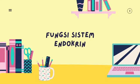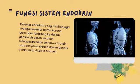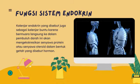Fungsi Sistem Endokrin. Kelenjar endokrin yang disebut juga sebagai kelenjar buntu karena bermuara langsung ke dalam pembuluh darah. Hal ini akan mengekskresikan senyawa protein atau senyawa steroid dalam bentuk getah yang disebut dengan hormon.